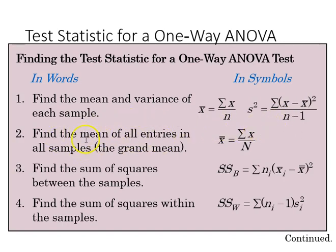We then find the mean of all entries in all samples, we call the grand mean, indicated by having two bars over the x, and the capital N as the pooled sample size, and x the sum of x.